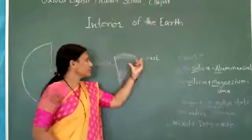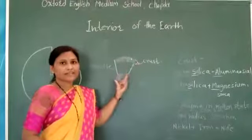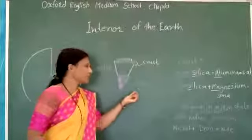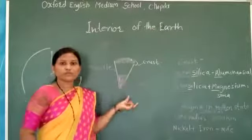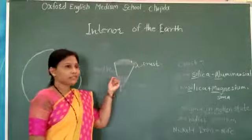The uppermost layer of earth's interior is known as crust. The second layer is known as mantle, and the innermost third layer is known as core. We will learn about these layers one by one in detail.